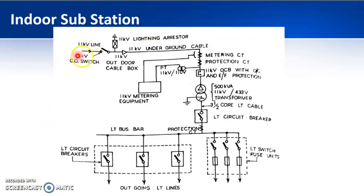Here you can see that you are receiving an 11 kV supply from the transmission or distribution lines running beside the industry where you are keeping your indoor substation. First you will have an air break switch, which is the gang-operated switch used for connecting or disconnecting the supply — making or breaking the supply. Then you will have an 11 kV lightning arrestor.